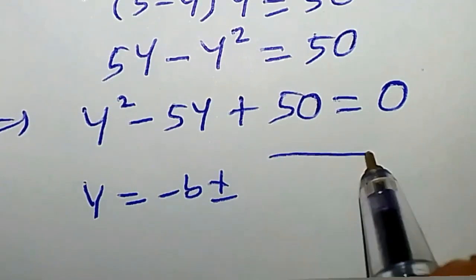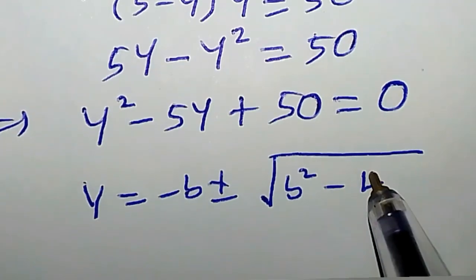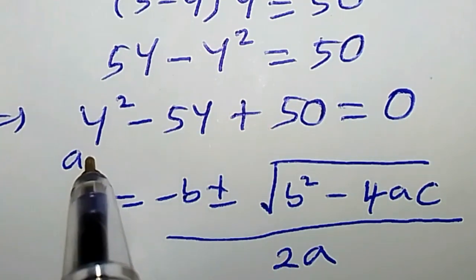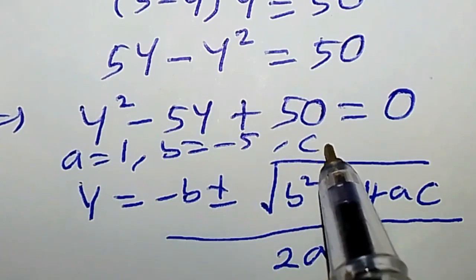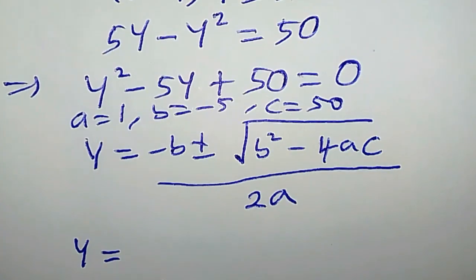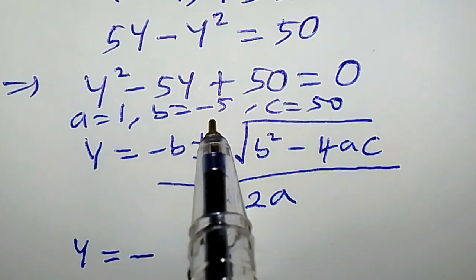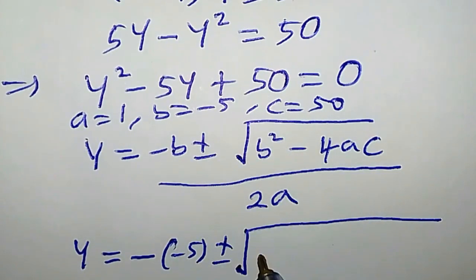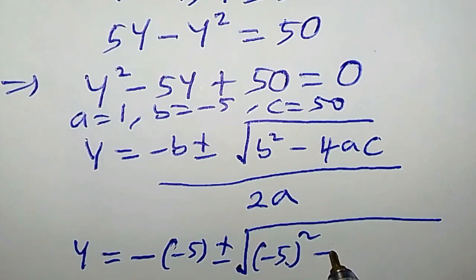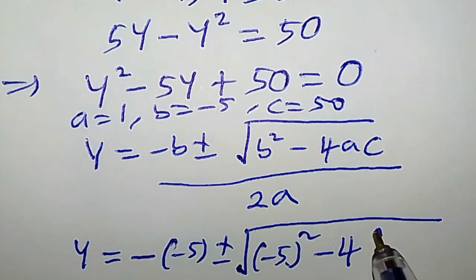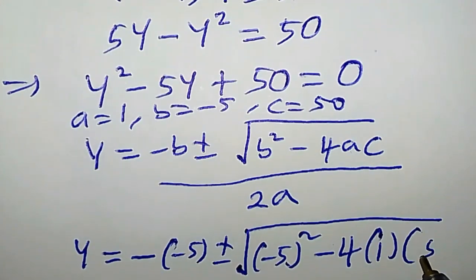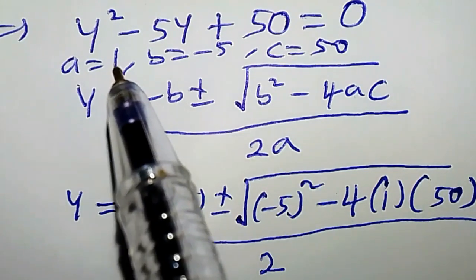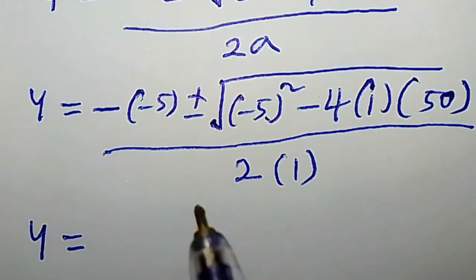So let us solve it using the quadratic formula, which is y equal to minus b plus or minus square root of b squared minus 4ac, all divided by 2a. From this equation, a is equal to 1, b is minus 5, and c is equal to 50.